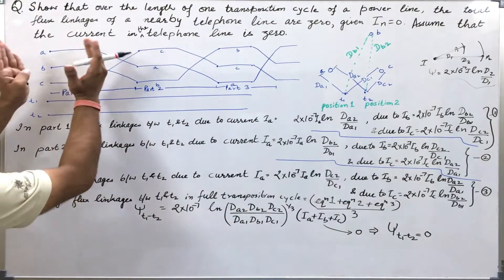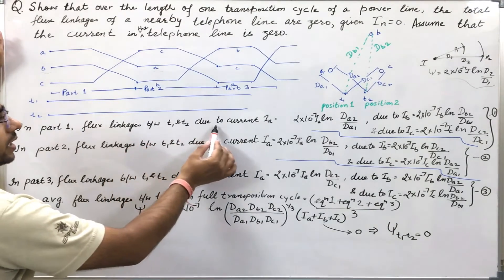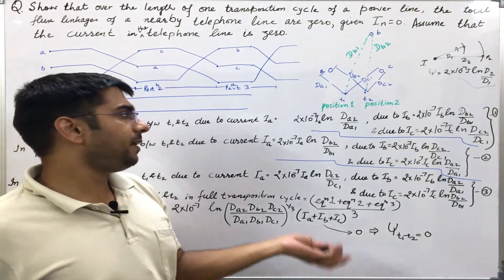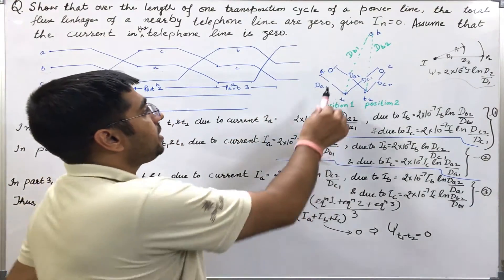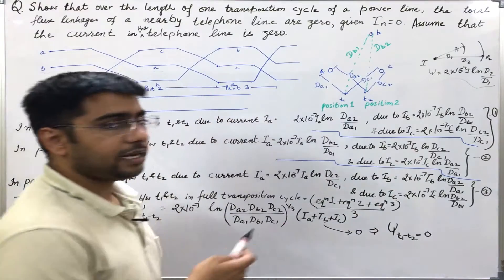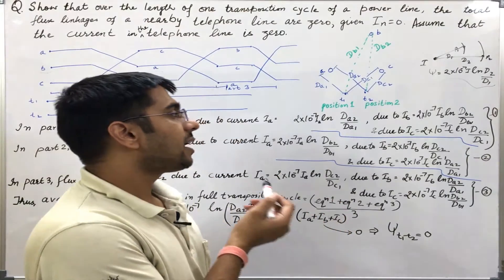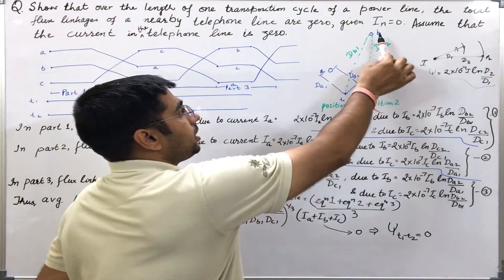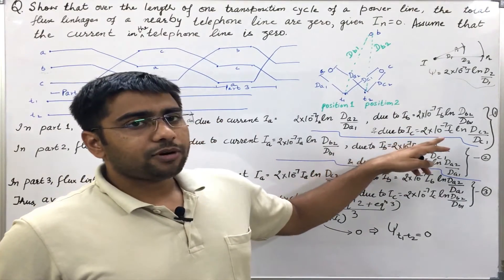In part 1, the flux linkages between T1 and T2 due to current Ia are 2 × 10⁻⁷ × Ia × ln(dA2/dA1). Similarly, due to current IB, the flux linkages between T1 and T2 are 2 × 10⁻⁷ × IB × ln(dB2/dB1). And similarly, I can write for IC also.